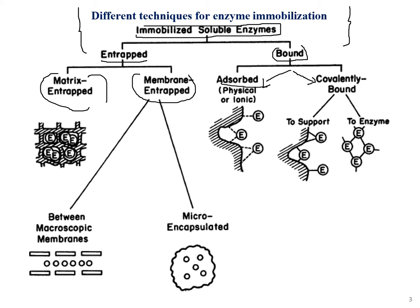Matrix entrapment involves gaps maintained within the matrix structure, making it a better process in some contexts. Membrane entrapment involves microscopic membranes and micro-encapsulation — membranes small enough to allow molecular passage. Covalently bound enzymes are joined by covalent bonds, while adsorption uses physical or ionic bonds.